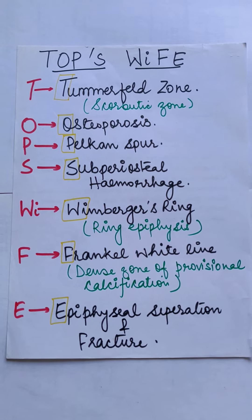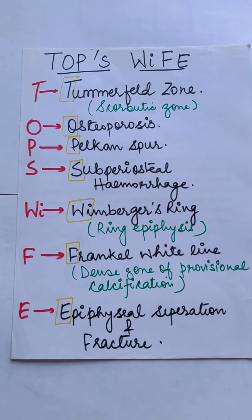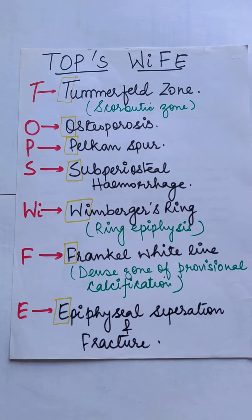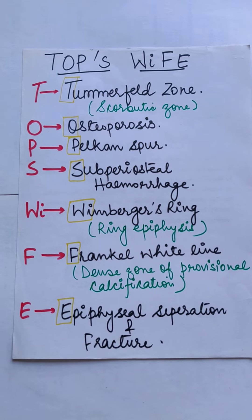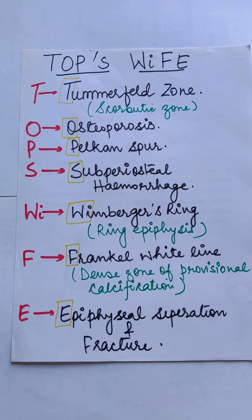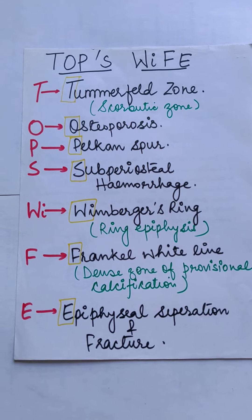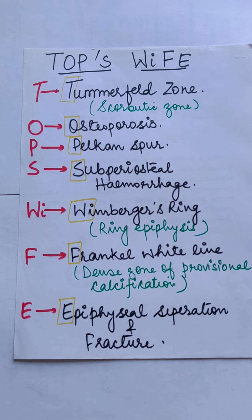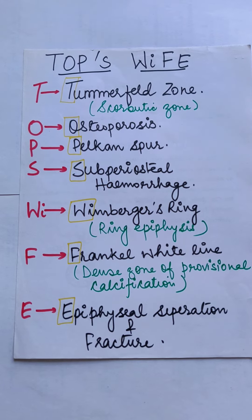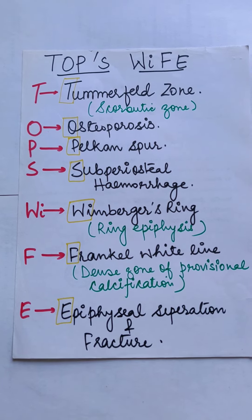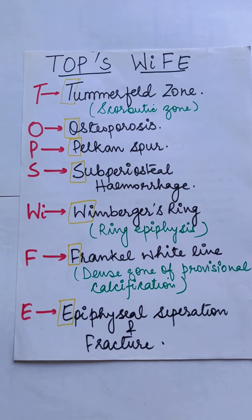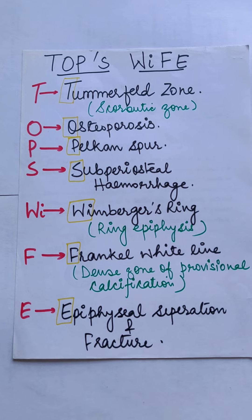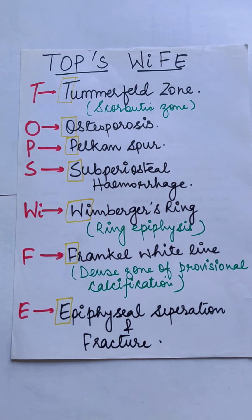Now coming to the second part of the mnemonic, TOPS: T stands for Trümmerfeld Zone, also known as Corbiotic Zone. O stands for Osteoporosis. P stands for Pelkan Spur. S stands for Subperiosteal Hemorrhage.